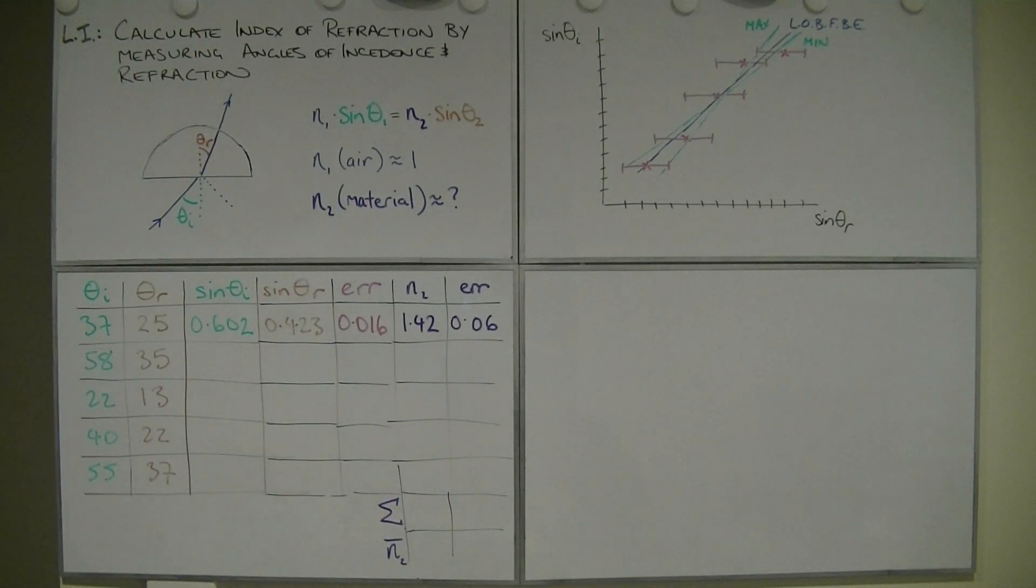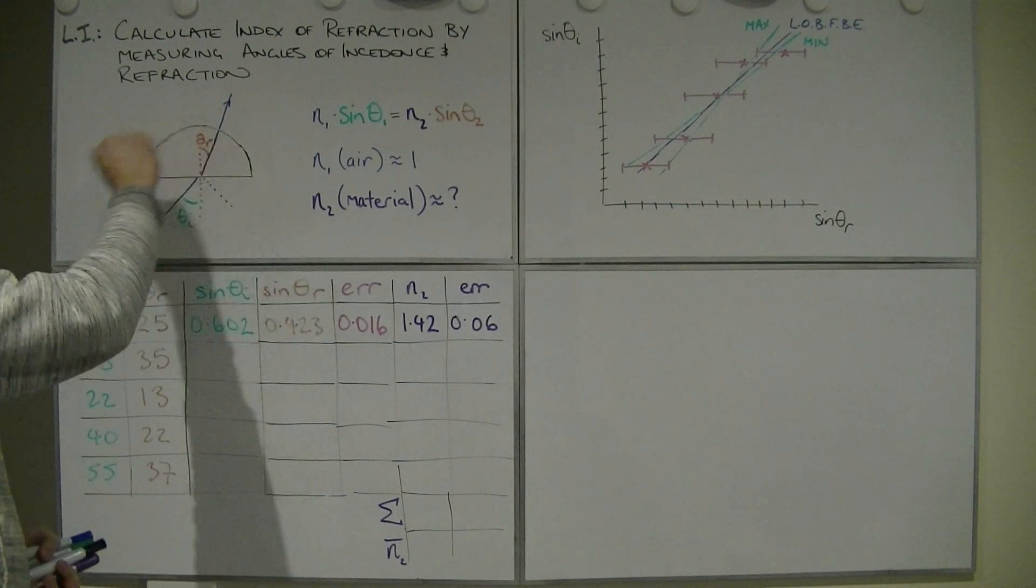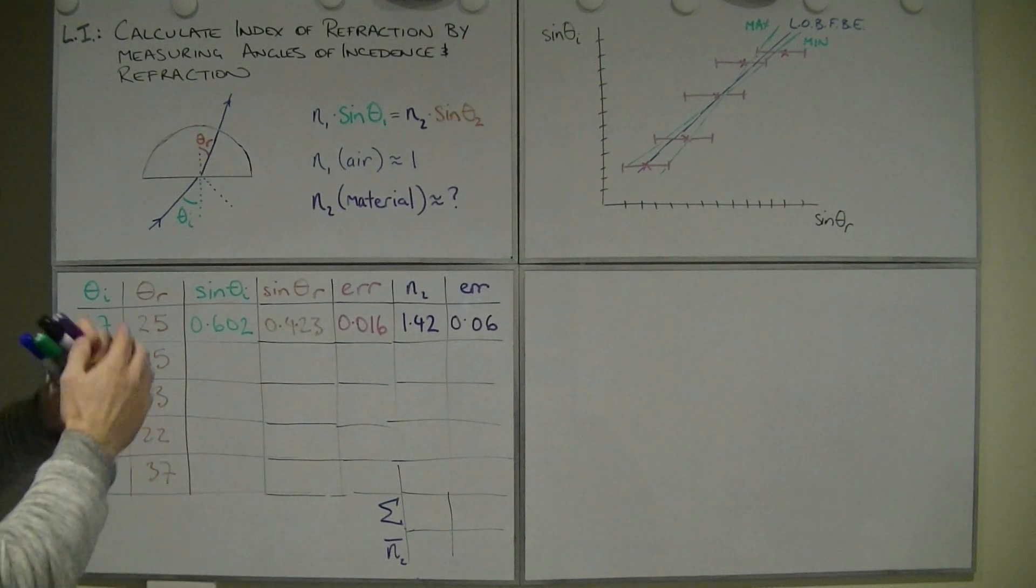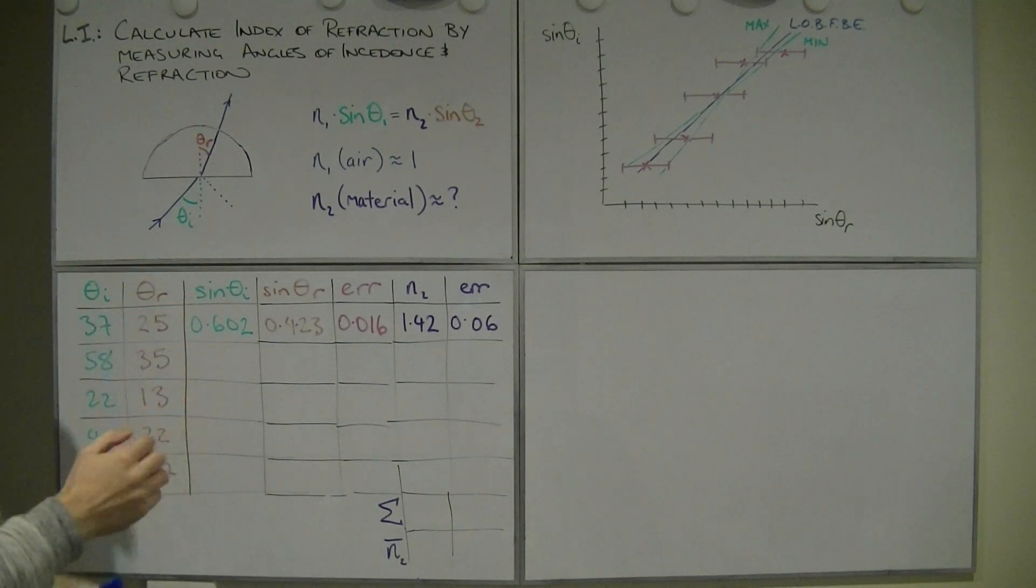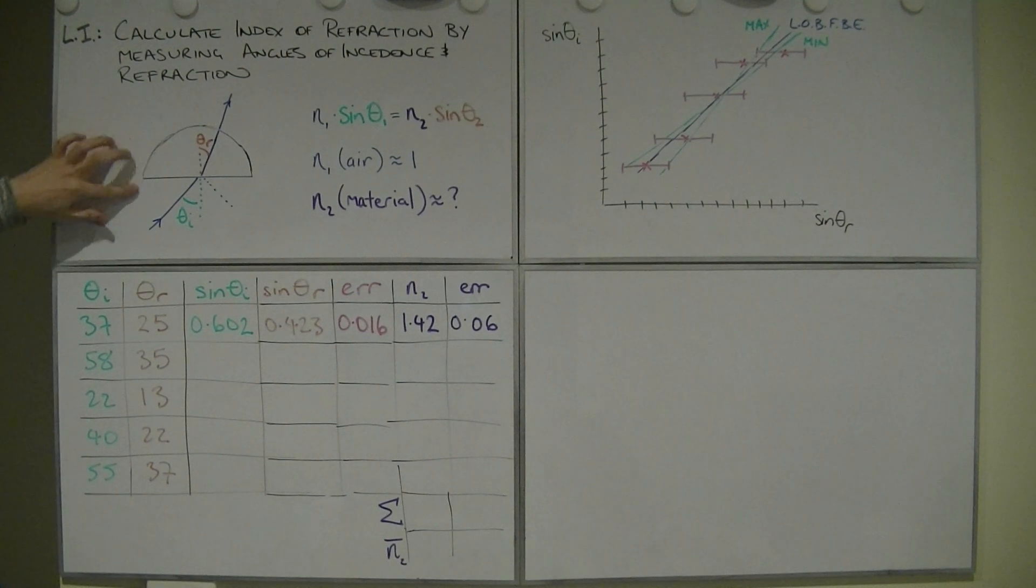Okay, calculating index of refraction by measuring angles of incidence and refraction. What we did last year specifically was we used a half-circle, semi-circle of perspex, I think it was. Doesn't matter, it's just a material, that's all we care about.